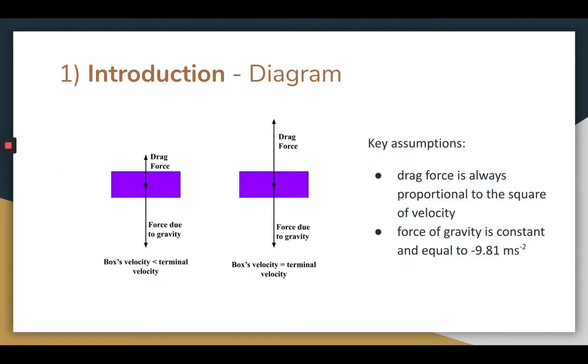This diagram shows the forces acting on the falling box at different times. Initially, the magnitude of the drag force is less than that of the force due to gravity. This results in an unbalanced net force that I mentioned before. As seen in the diagram, the net force points downwards. In this case, the box has not yet reached its terminal velocity, which is the velocity at which the drag force and force due to gravity are equal and opposite. This is shown in the second diagram.